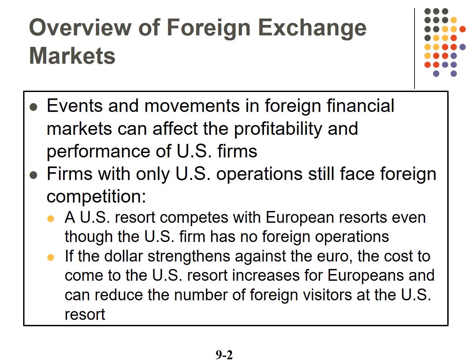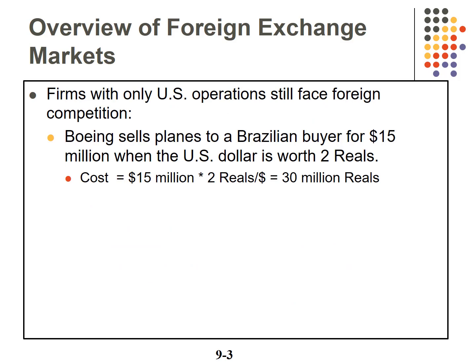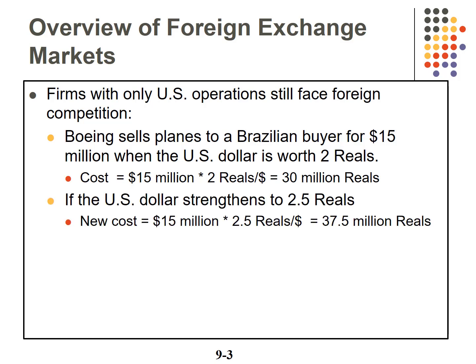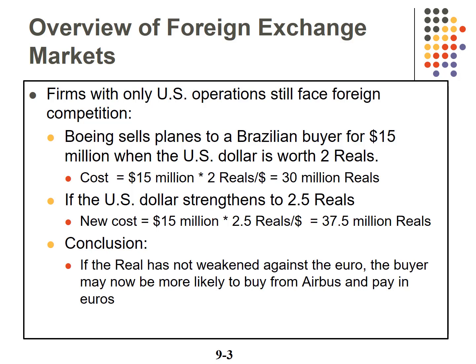A US resort competes with European resorts. If the dollar strengthens against the Euro, the cost to come to the US increases, making the European resort more attractive to foreign visitors. Another example: Boeing sells planes to a Brazilian buyer for $15 million when the US dollar equals 2 Brazilian reals, so the cost in reals is 30 million. If the US dollar strengthens to 2.5 reals, the new cost to the buyer is 37.5 million. If the real has not weakened against the Euro, the buyer may look to Airbus and pay in Euros.